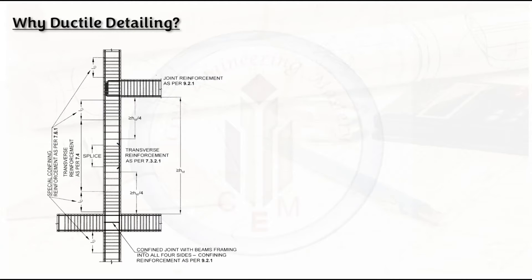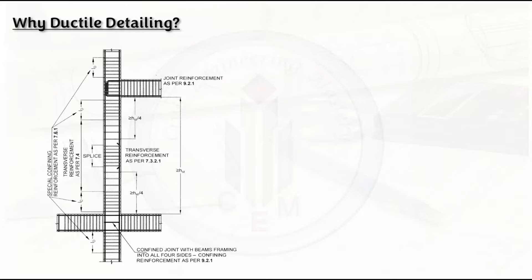Let's start with ductile detailing — what it is and why we provide it. Ductile detailing helps structural members undergo larger deformation without collapse. That is the main concept: it allows a structural member to undergo larger deformation without collapse. Ductile detailing ensures the structural member may suffer irreparable damage but will not collapse.